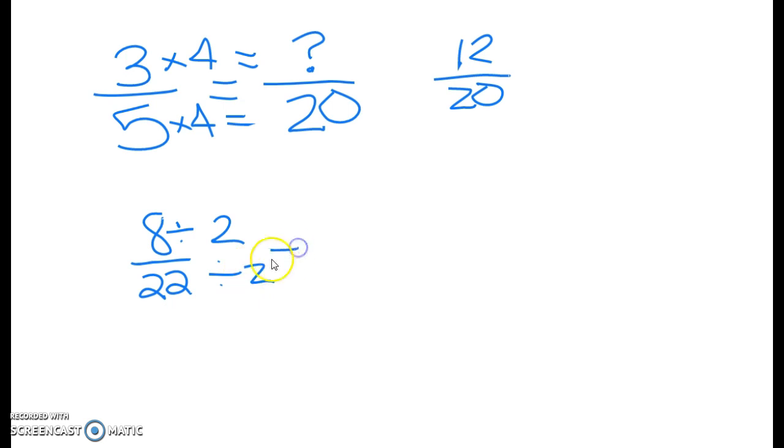8 divided by 2 equals 4. 22 divided by 2 equals 11. There are no other common factors between 4 and 11, so this is as low as we can reduce 8 over 22.